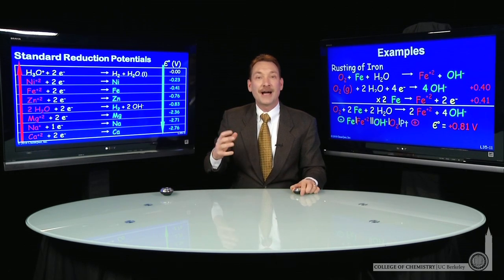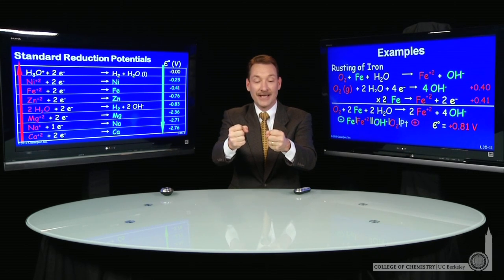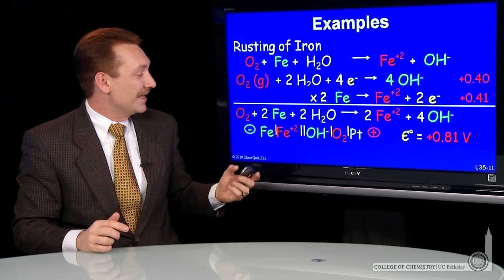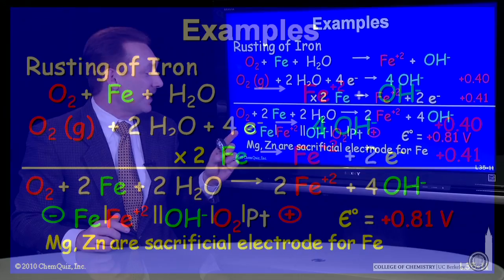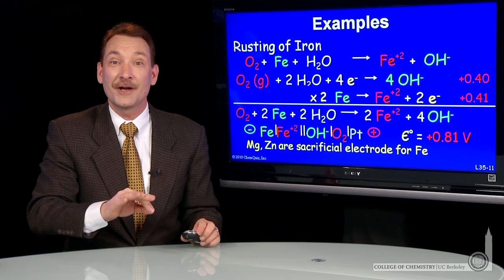So if I had a combination of iron and zinc, it would be the zinc that would be oxidized first because that has the greater potential. You can use zinc and magnesium as sacrificial electrodes for iron. They'll protect the iron from oxidation.